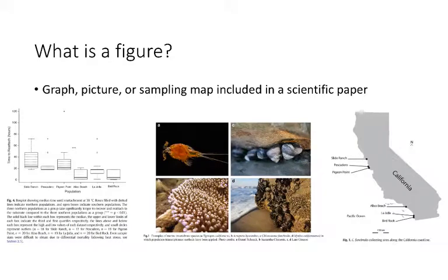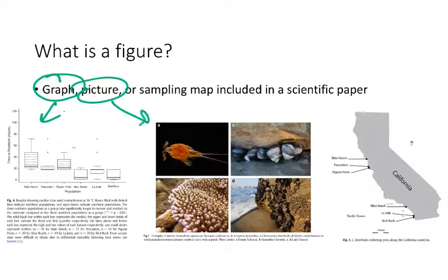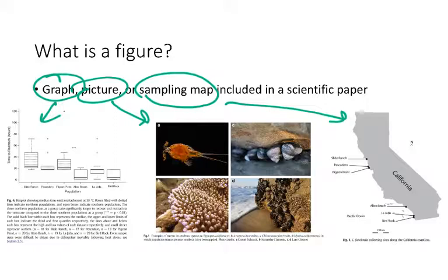So first of all, just so we're all on the same page, what is a figure? A figure is either a graph — here on the very far left we have an example, like box plots for instance, that we've looked at previously. A figure could also be something like a picture — here in the middle we have an example of a picture from a review paper I wrote recently showing different organisms that certain types of studies have been done on. Or a figure could also be something like a sampling map that shows where you've collected your individuals from — so here on the right I have an example of a sampling map showing individuals collected from different geographic sites in California. So it could be a graph, a picture, or a sampling map.